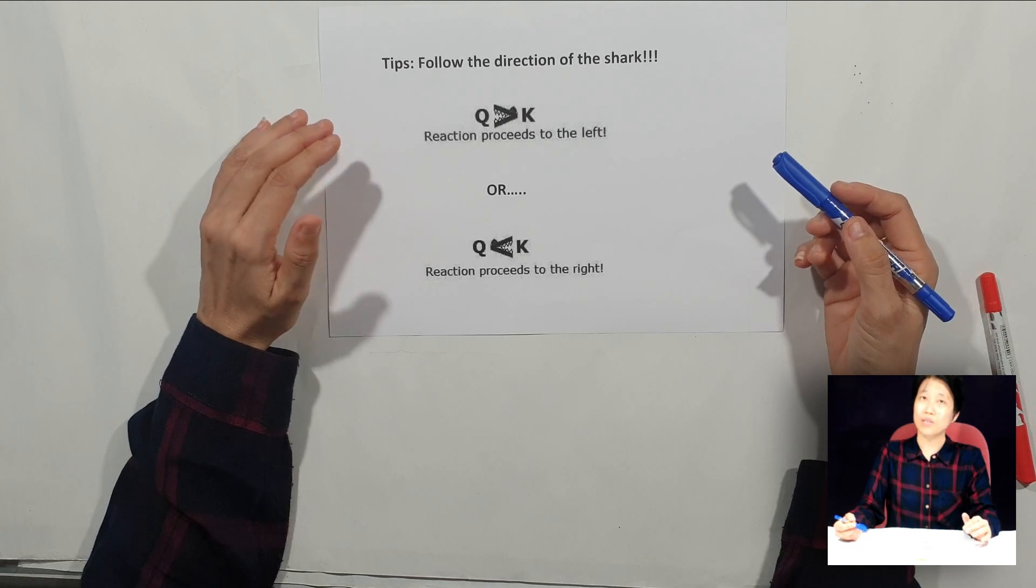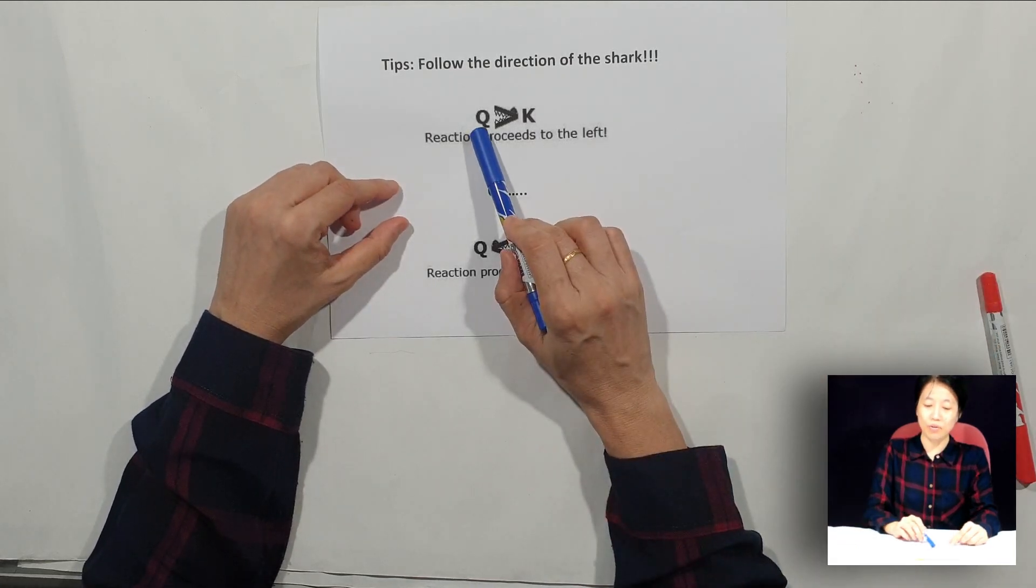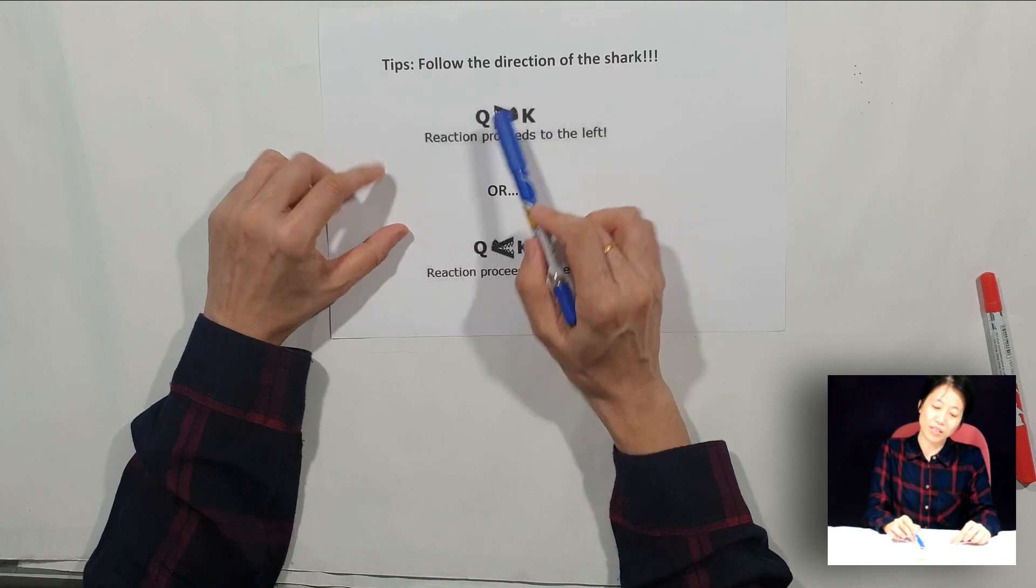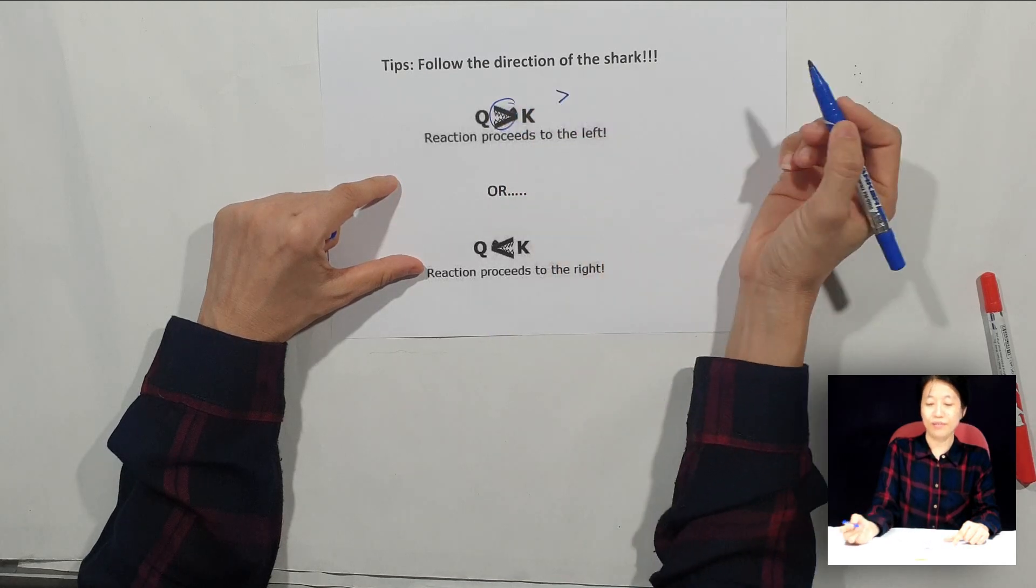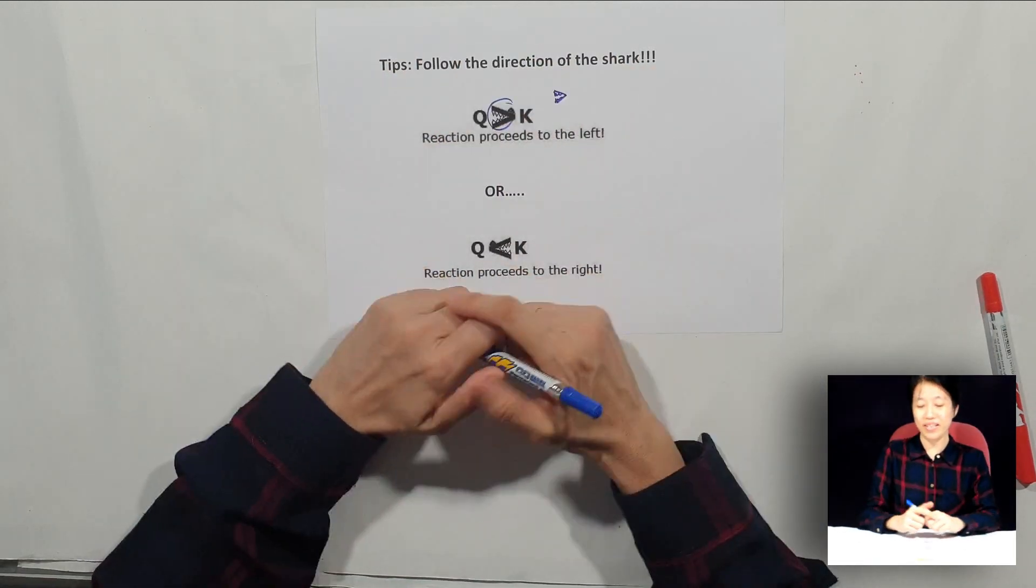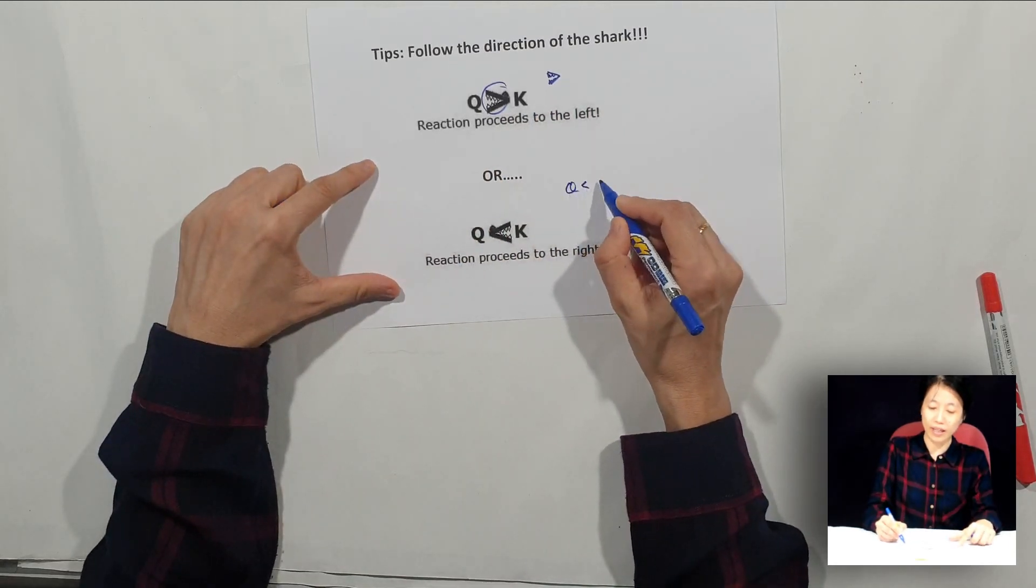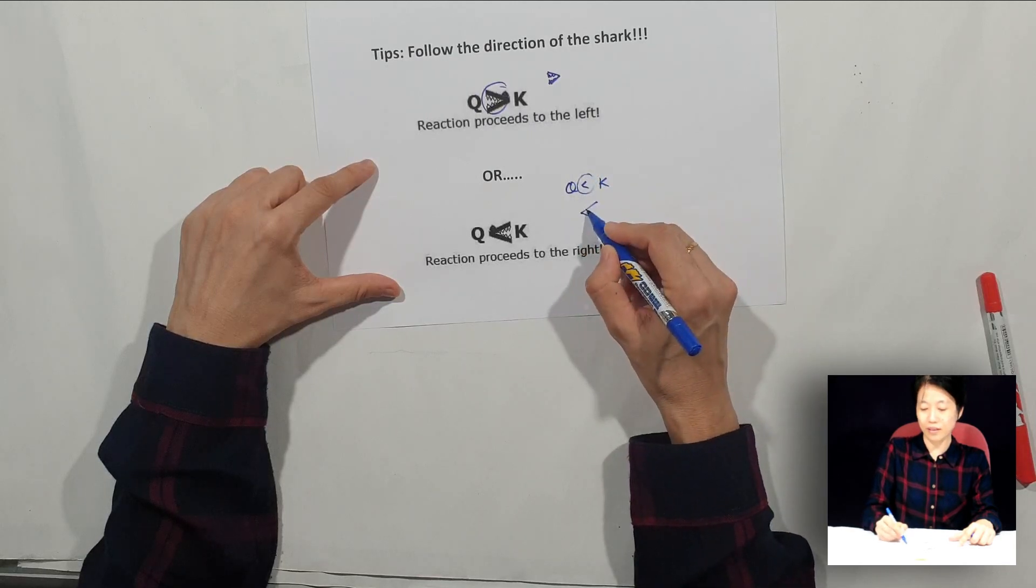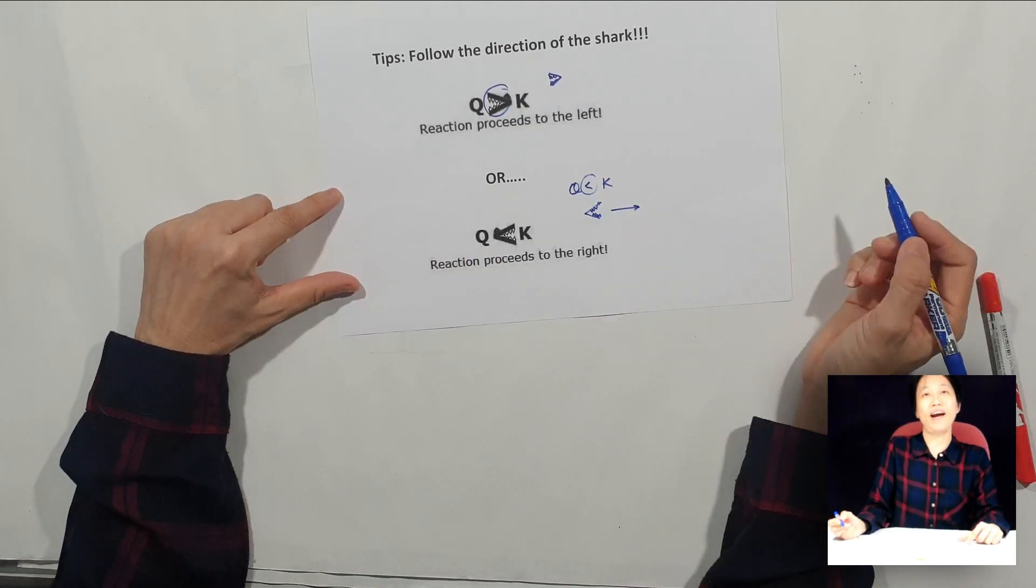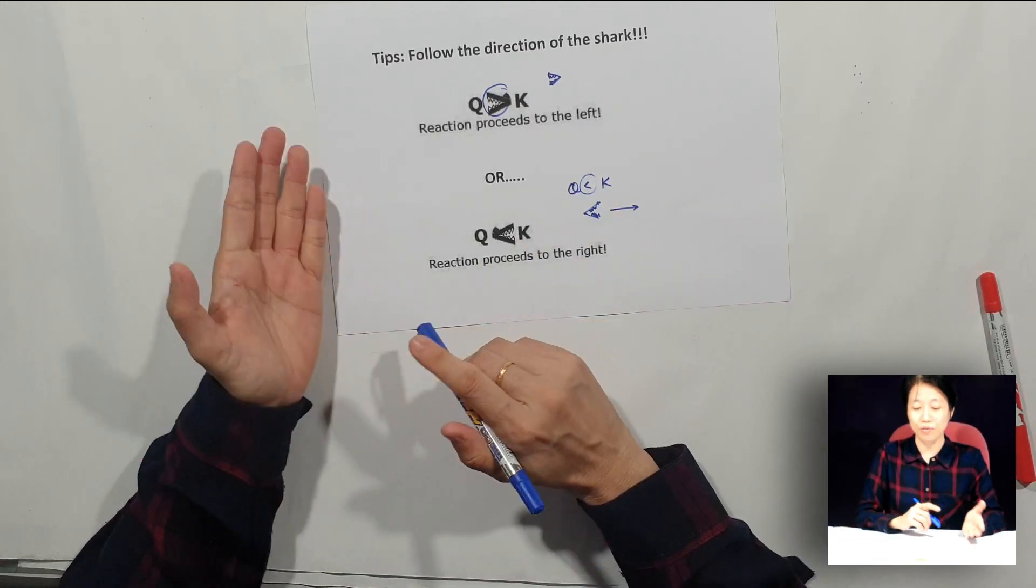We can use some tricks to remember the direction of a net reaction. So if I have Q larger than K, we just follow the direction of the shark. Imagine this is the mouth of a shark. You can see that the mouth is facing left hand side, so the reaction will try to proceed to the left. If Q is smaller than K, this is the mouth of a shark chasing something towards the right. So you can use this trick to remember the net direction when comparing Q to K.